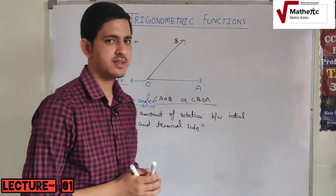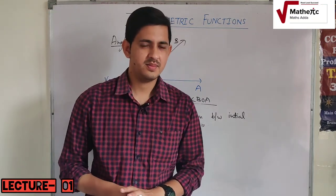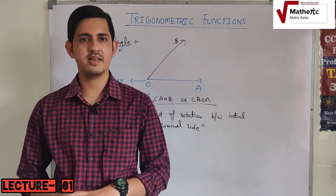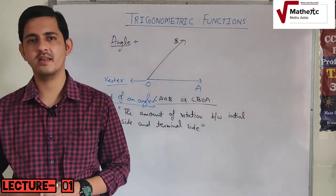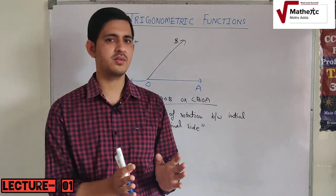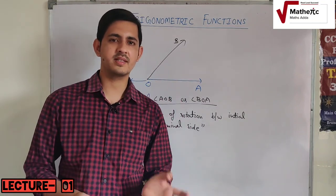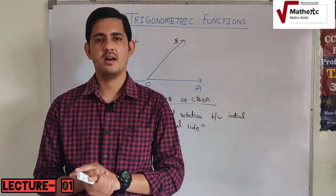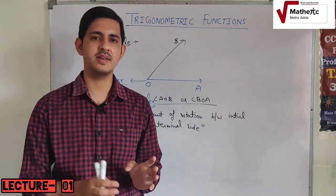The amount of rotation between the initial side and terminal side is called the measurement of an angle. Now, just like other physical quantities — weight, mass, distance, time, velocity — each has defined units. Similarly, angle measurement has some defined units, and we have to learn three systems: the sexagesimal or English system, the centesimal system, and the circular system.